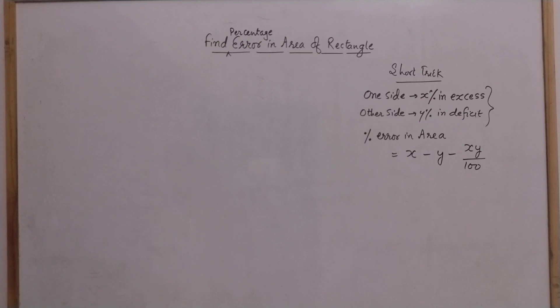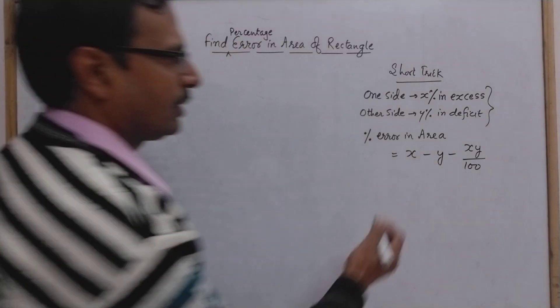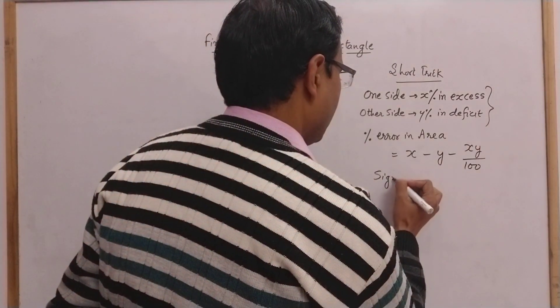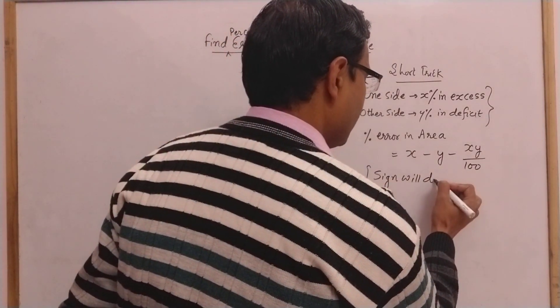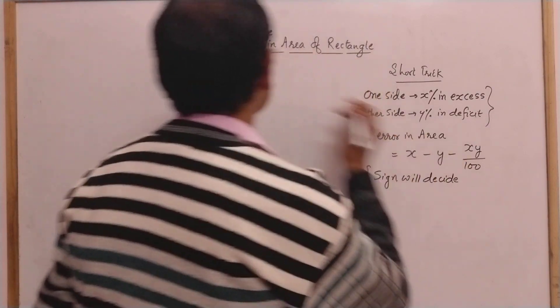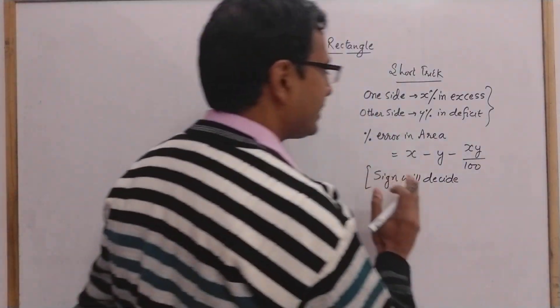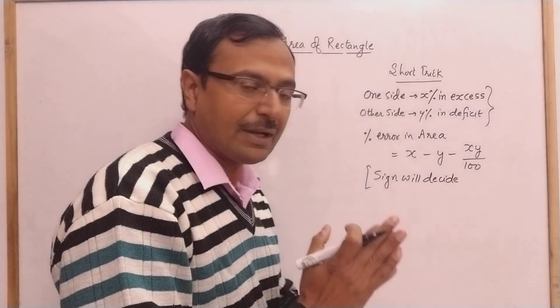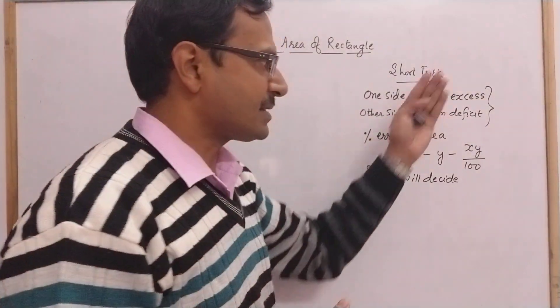According to the sign, we will decide whether the percentage error in area is positive or negative, that will be either excess or deficit.